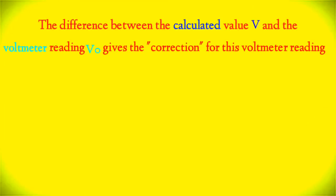The difference between the calculated value V and the voltmeter reading V zero gives the correction for this voltmeter reading.